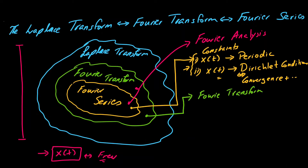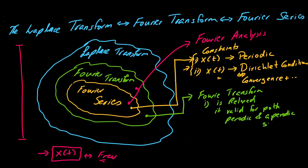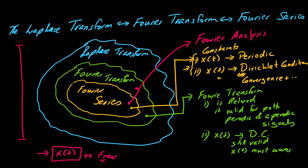Moving to the Fourier transform, the first condition is relaxed — it is valid for both periodic and aperiodic signals. However, the second condition, that x(t) should follow the Dirichlet conditions, is still valid. This means that x(t) must be a converging signal in order for us to form the Fourier transform of it.